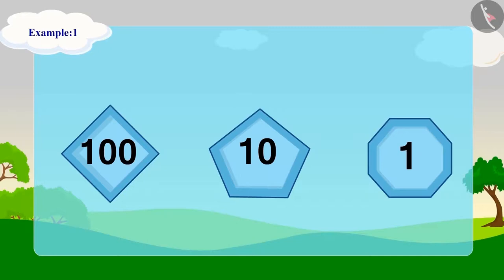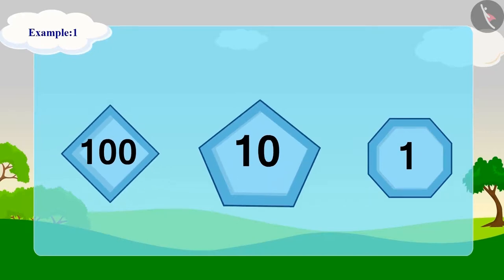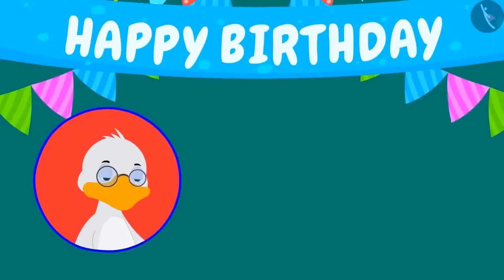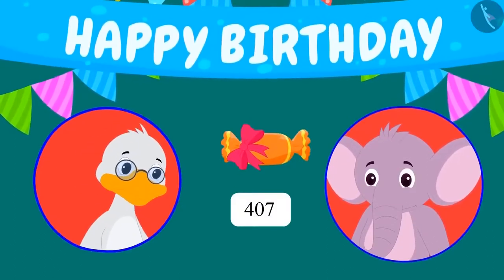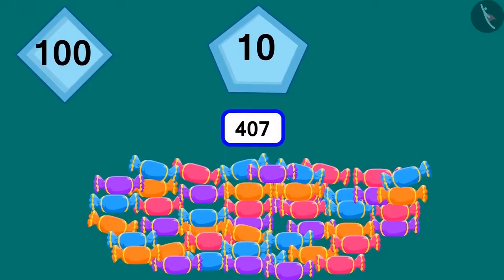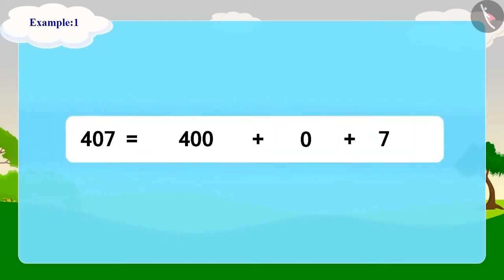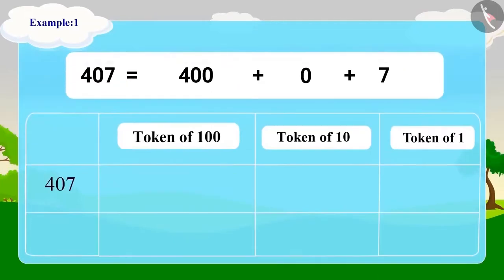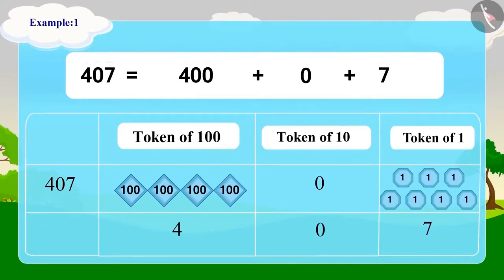Using this method, we can write any three-digit number using Appu's tokens of 100, 10 and 1. Badbola Uncle has given 407 toffees to Appu. Can you write the number of these toffees in the tokens of 100, 10 and 1? Let's write it together. We can write 407 in this way in the expanded form. We can write 400 as 4 tokens of 100. There are no two-digit numbers here. So we will not use any token of 10. We will write 0 in the place of the token of 10 and 7 will be shown using 7 tokens of 1 in this manner. In this way, we can write 407 toffees in tokens of 100, 10 and 1.